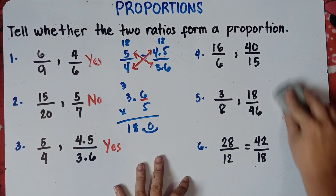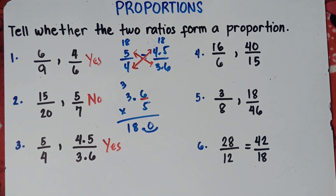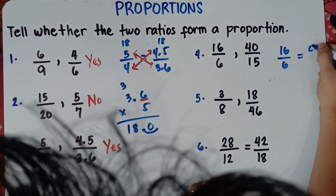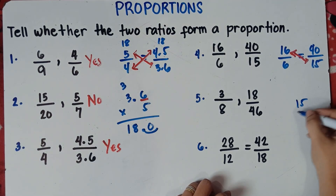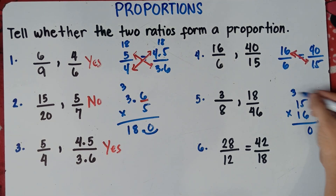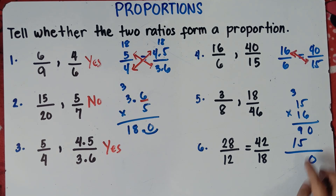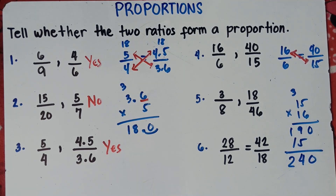Let's try number 4. We have 16/6 = 40/15. Let's do the cross multiplication: 16 times 15. So 6 times 5 is 30, zero carry 3; 6 times 1 is 6, plus 3 is 9; 1 times 5 is 5; 1 times 1 is 1; 9 plus 5 is 14, carry 1; 1 plus 1 is 2. So that is 240.